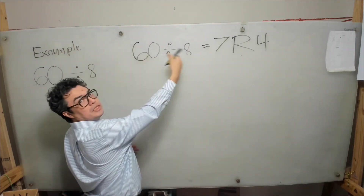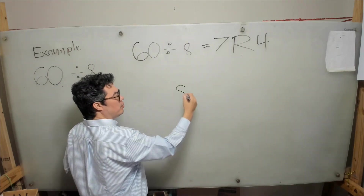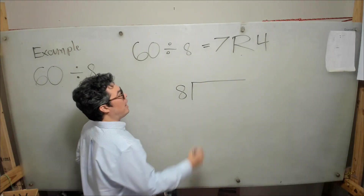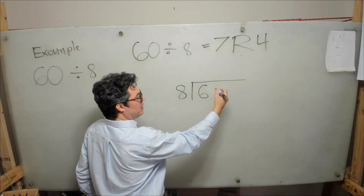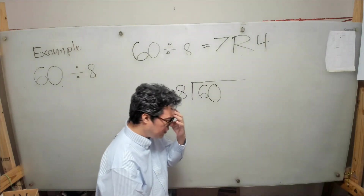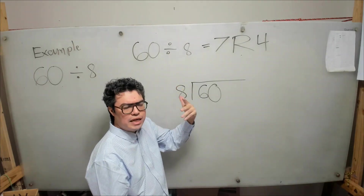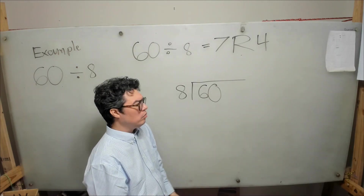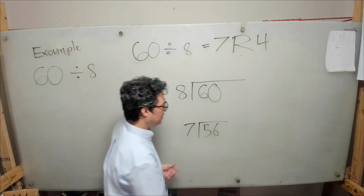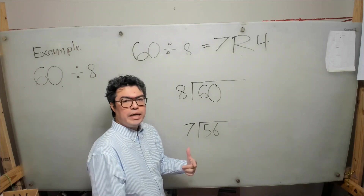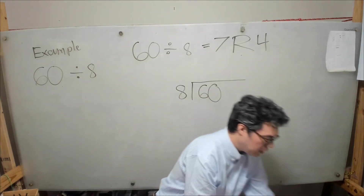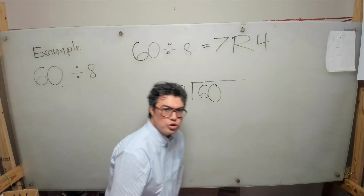To write 60 divided by 8 in the other notation, we put the 8 on the outside of the division house — that sideways L shape — and place the number we want to divide, 60, on the inside. You read this as 60 divided by 8. In your brain you can think of it as: how many times does 8 go into 60? To actually do the division, we go digit by digit.